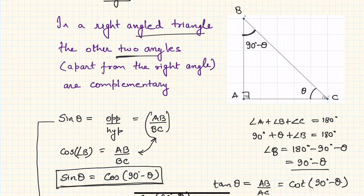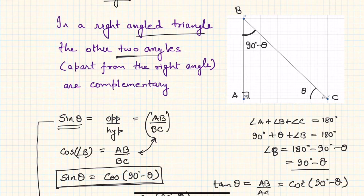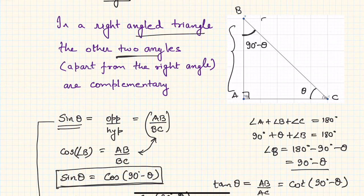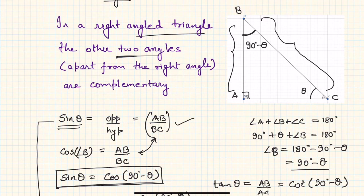Now let us analyze the t-ratios of complementary angles. Sin of theta, by definition, is the opposite side to theta — that is side AB — divided by the hypotenuse BC. So sin of theta equals AB upon BC.